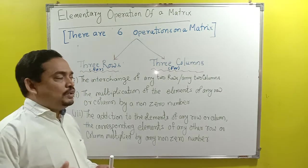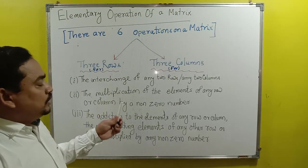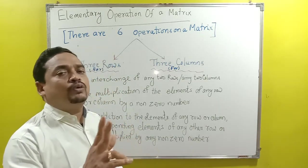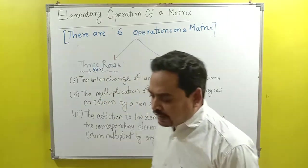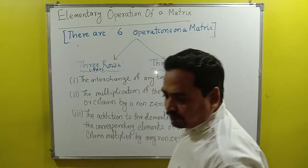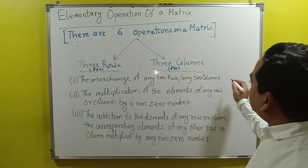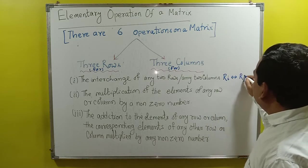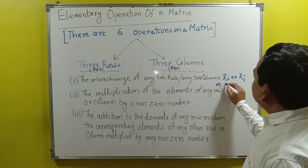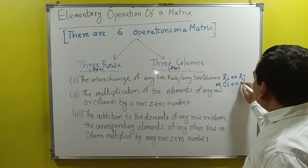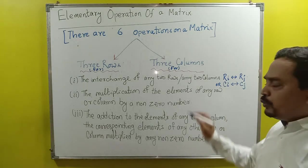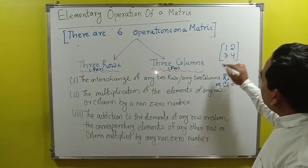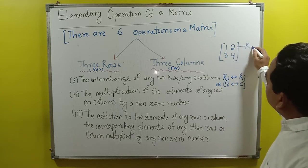In the matrix, when we apply this operation, if 2 rows are interchanged or 2 columns are interchanged — in short it is written as R_i interchange with R_j, or C_i interchange with C_j. Suppose the matrix is [1, 2; 3, 4] — this is row 1 and this is row 2.